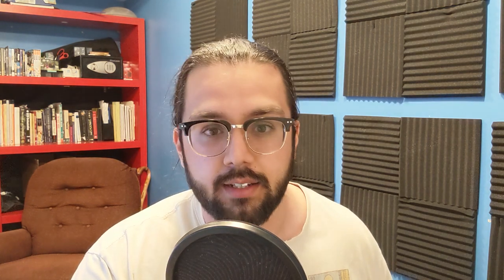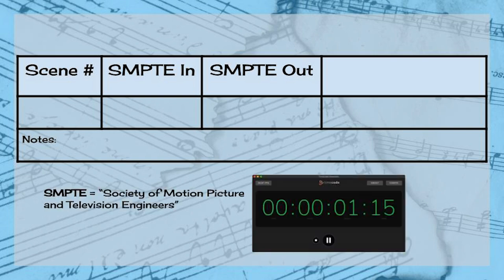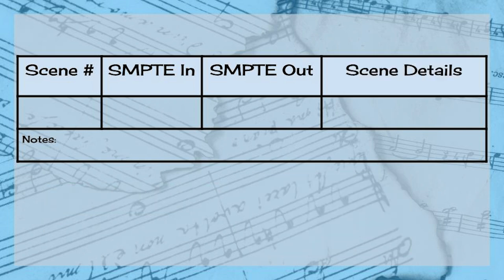As you create your scene list, it will be important to take some specific notes on a few different things. For example: what number is this scene in order of appearance — scene one, scene two, number 37, etc.? Next, when does this scene start and end? For this, you'll want to use SMPTE codes. SMPTE stands for the Society of Motion Picture and Television Engineers, and it's a standardized code that names every single frame of the film by the hour, minute, second, and frame that it appears at, making it possible for everyone working on the project to coordinate at a frame-accurate level. Most video projects you ever work on will include a SMPTE code on the screen, and The Foundling is no different. Finally, the last major thing to add to your scene list is a brief summary of the scene itself, including the answers to each of our four questions whenever possible.